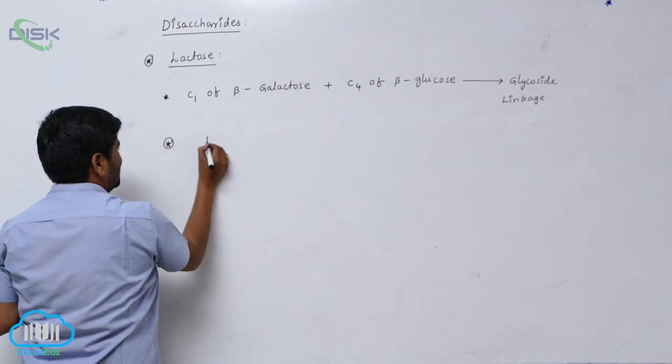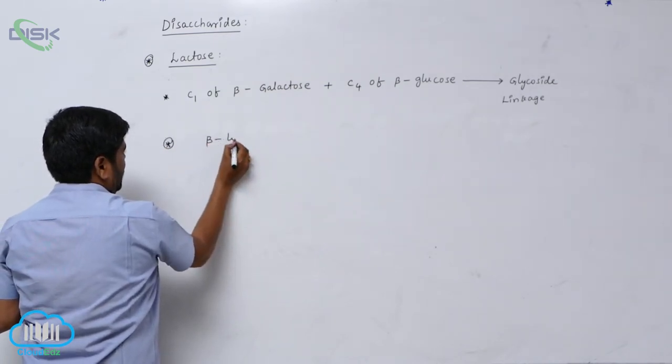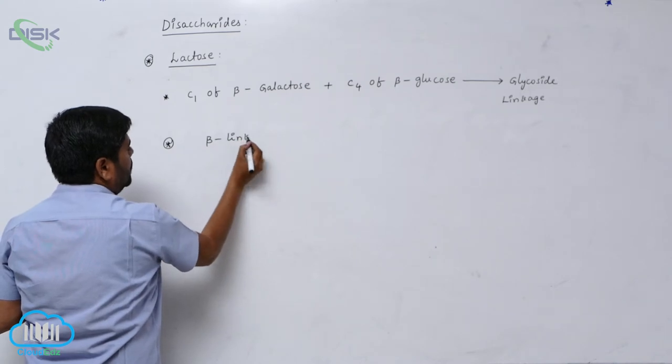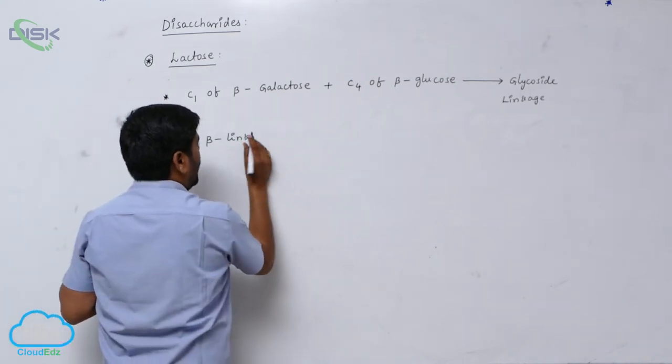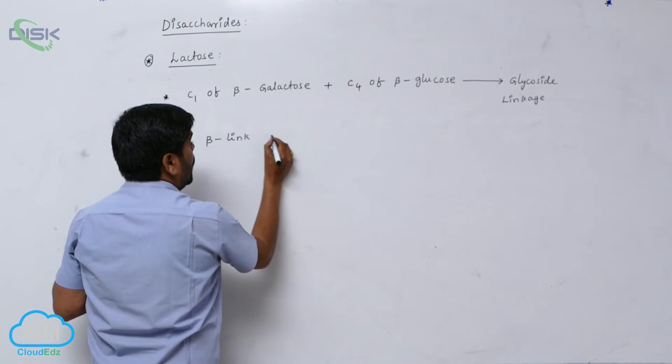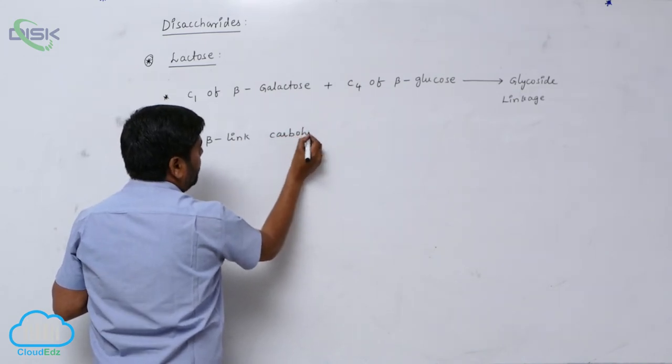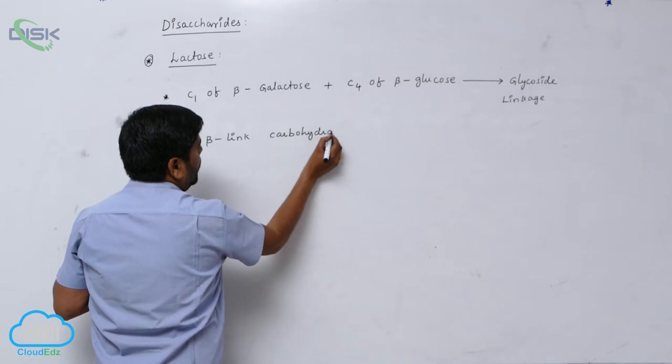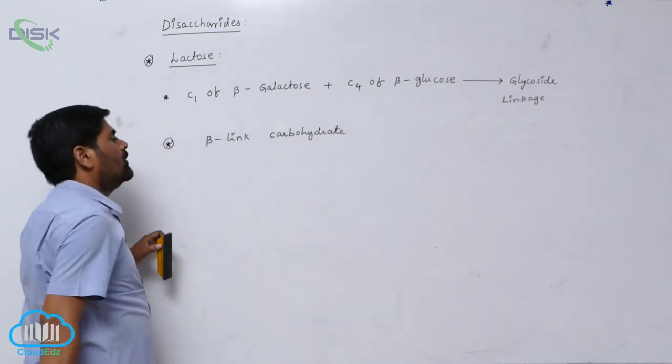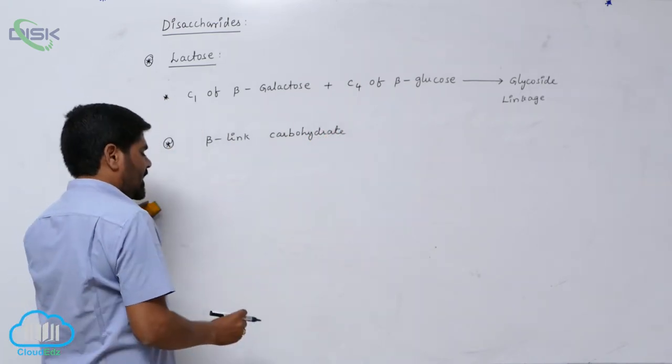It has beta-link carbohydrate. It has which one? Beta-link carbohydrate or disaccharide.